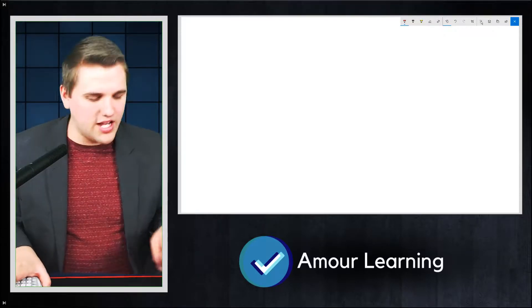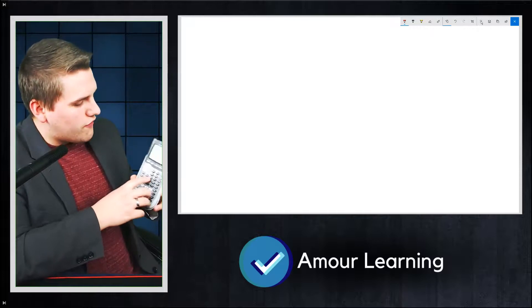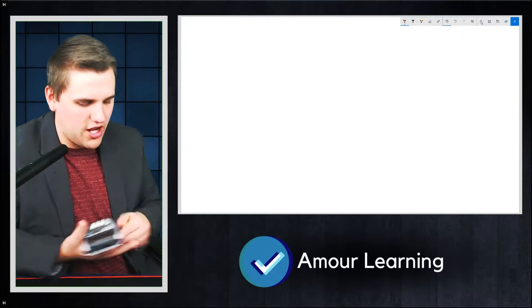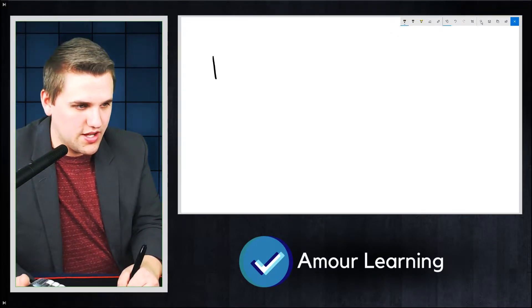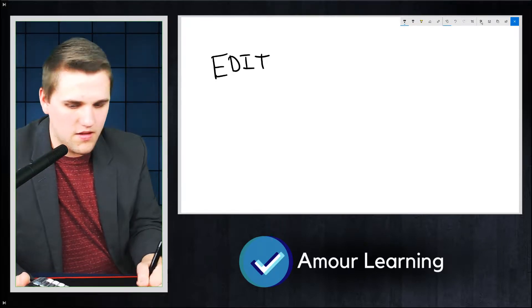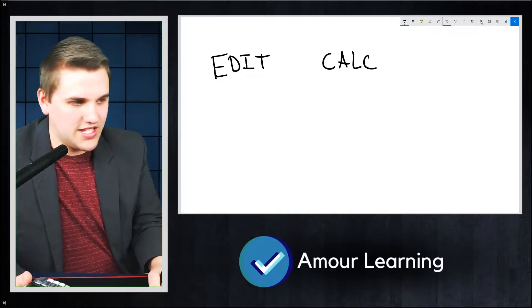Now let's talk about how to conduct a two-sample t-test. First off, there is a button that says STAT. If you click on it, you will see the following. You will see three menus: Edit, you'll see CALC, and you'll see Tests.